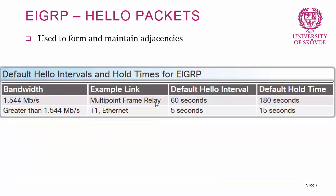Hello packets are sent during initial router startup to form adjacencies. Timers vary by link bandwidth: on links of 1.544 Mbps or less (such as multipoint Frame Relay), hello packets are sent every 60 seconds; on faster modern links, the hello interval is 5 seconds. The hold time dictates how long a router waits for a hello before considering a neighbor dead.